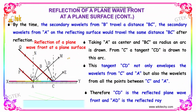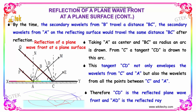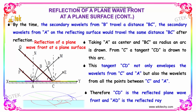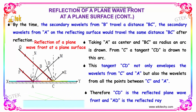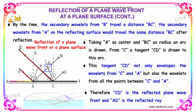By the time the secondary wavelet from B has travelled a distance BC, the wavelet from A on the reflecting surface would also travel the distance BC. Taking A as center and BC as radius, draw an arc. We get point D, so AD is equal to BC.